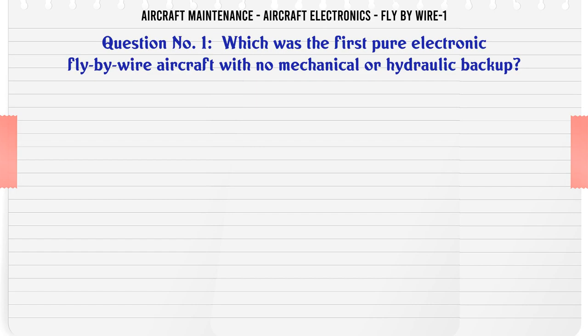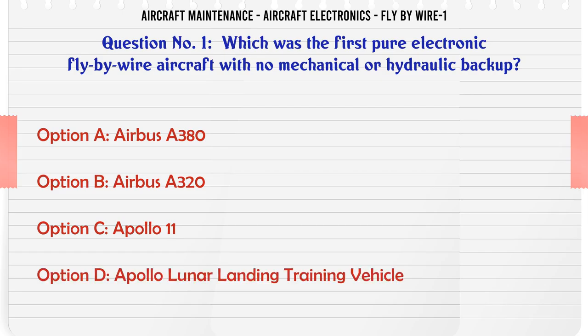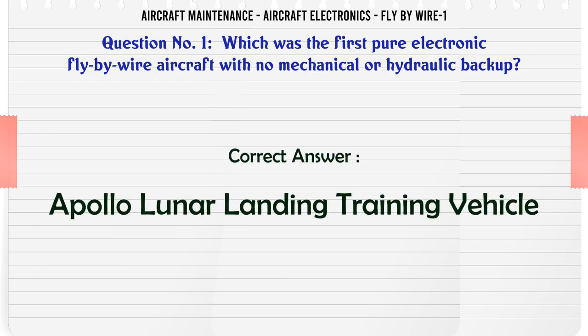Which was the first pure electronic fly-by-wire aircraft with no mechanical or hydraulic backup? A. Airbus A380. B. Airbus A320. C. Apollo 11. D. Apollo Lunar Landing Training Vehicle. The correct answer is: Apollo Lunar Landing Training Vehicle.